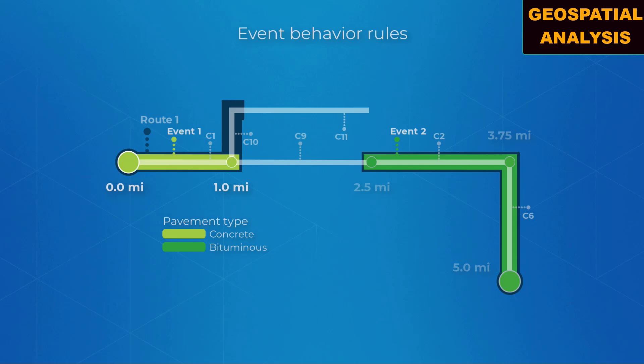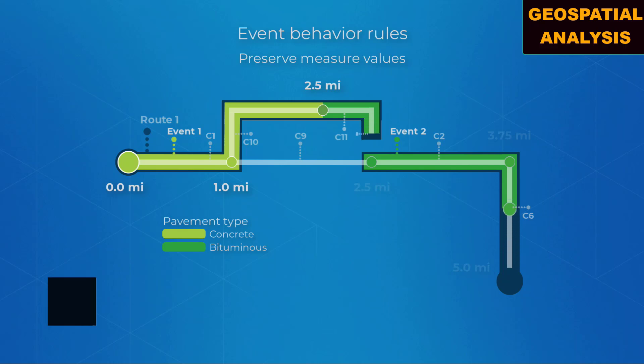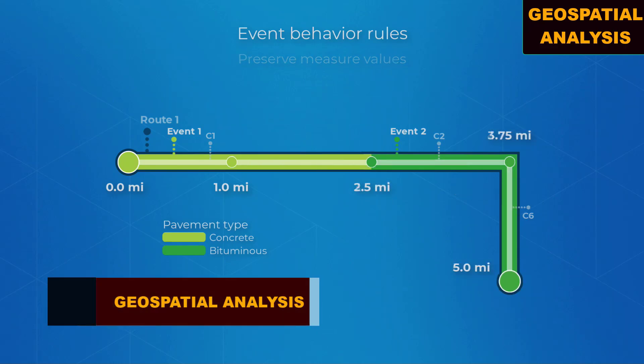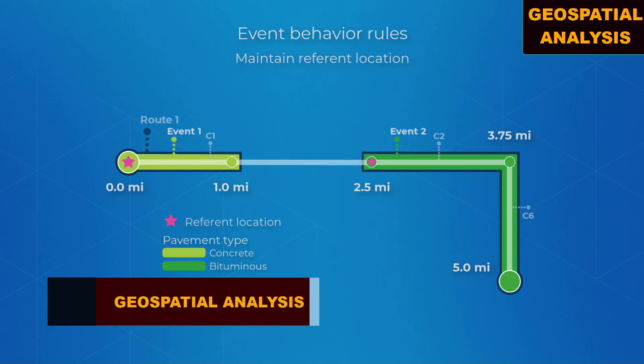When configuring event behaviors, consider if you want the event to react by preserving its geographic location, by preserving its measure values, or by maintaining a reference location.